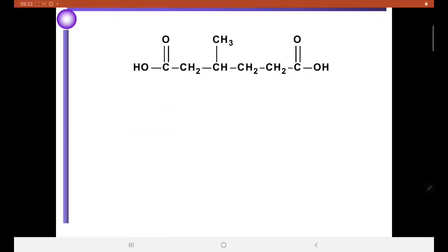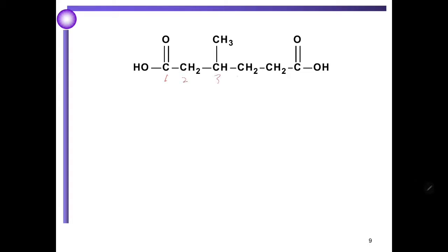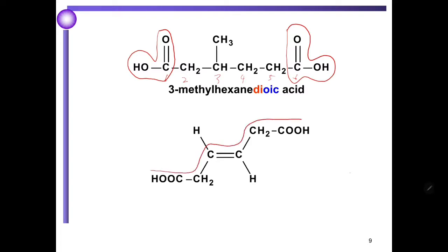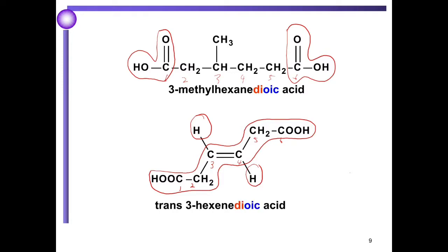Another example: we have a six-carbon longest chain and two carboxyl groups, so the name will become 3-methylhexanoic acid. The next example has a carbon-carbon double bond at carbon number three. When the position of H is on different sides of the carbon-carbon double bond, the IUPAC name will become trans-3-hexenoic acid.